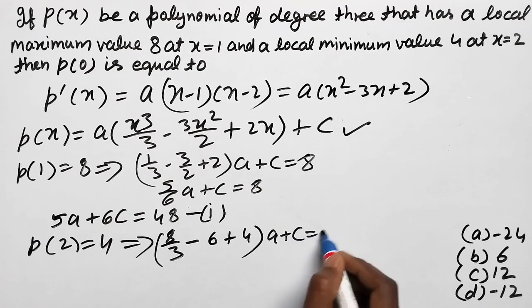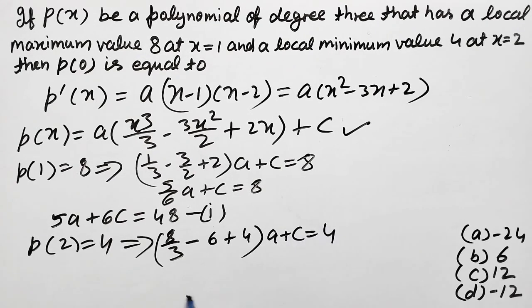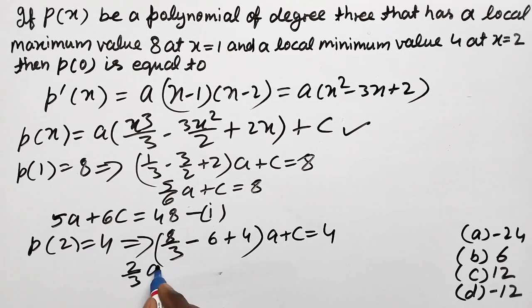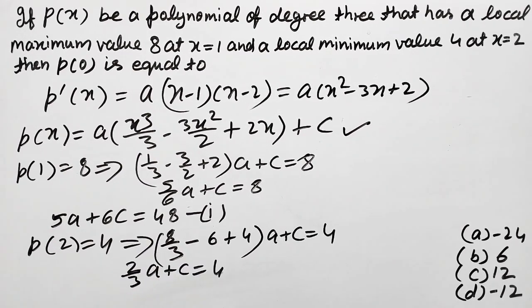A plus C equal 4. If we add these, 8 minus 18 plus 12, this becomes 2/3. So 2/3 A plus C equal 4. Multiply by 3, 2A plus 3C is equal 12, second equation.